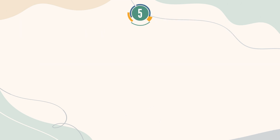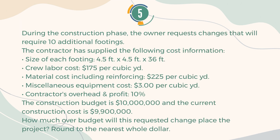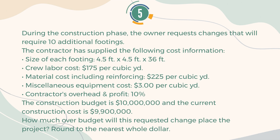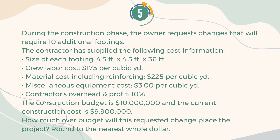Number 5. During the construction phase, the owner requests changes that will require 10 additional footings. The contractor has supplied the following cost information: size of each footing, 4.5 feet × 4.5 feet × 36 feet; crew labor cost, $175 per cubic yard; material cost including reinforcing, $225 per cubic yard; miscellaneous equipment cost, $3 per cubic yard; contractor's overhead and profit, 10%. The construction budget is $10 million, and the current construction cost is $9,900,000. How much over budget will this requested change place the project? Round to the nearest whole dollar.